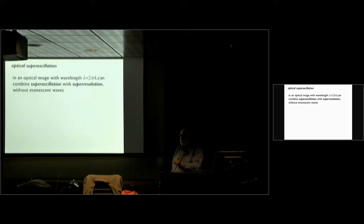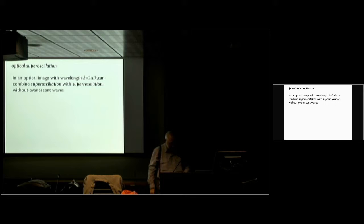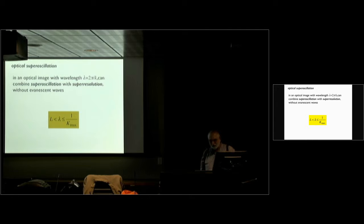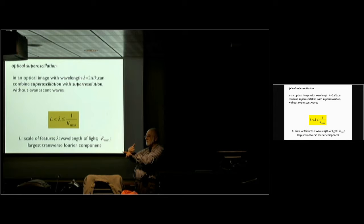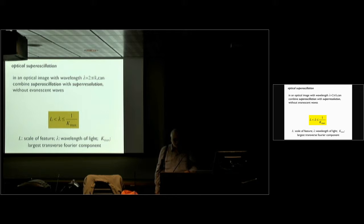Everyone knows that if you're doing near-field microscopy, if you're near to an object, you can see the fine detail — it's only that it doesn't propagate. Now, here are three lengths: the scale of the thing you're looking at, the wavelength, and the largest transverse Fourier component. You're thinking of a beam — it has a longitudinal and a transverse Fourier component. The wavelength is to do with the length of the wave vector, 2π over it.